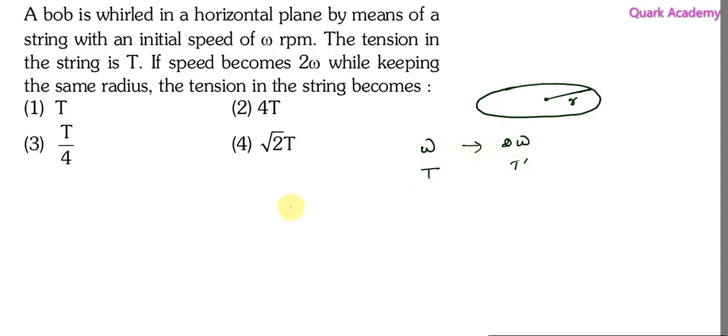Here tension is because of the centripetal force. How do you write centripetal force? We can write using mv squared by r. Here v is linear velocity that we can write in terms of angular velocity.